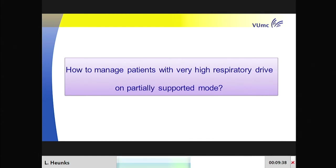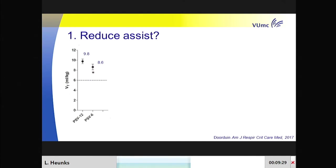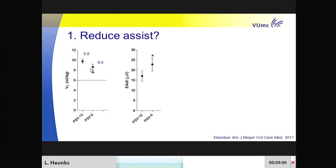So if a patient has a high respiratory drive, how do we manage it? If this patient is on 12 cmH₂O of pressure support and tidal volumes are around 10 ml per kilogram, would it be a good idea to reduce the level of support? That's what we did in a study just published in the Blue Journal. In ARDS patients with a PF ratio around 140 on 12 cmH₂O of pressure support, we decreased the level of support and—as expected—tidal volume went down.